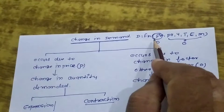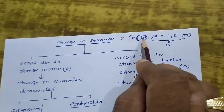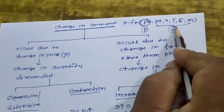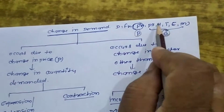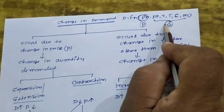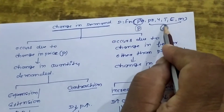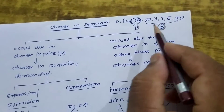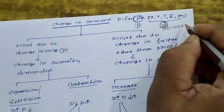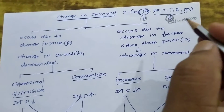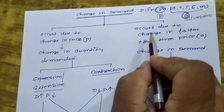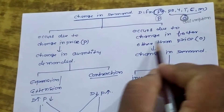Dear students, you must have noticed one thing. In demand, there is one price and one factor 'other than price.' So in all these cases, price becomes constant, and the change in demand happens due to change in factors other than price. And these other factors are what we call assumptions. Now I will make the flow chart: change in demand occurs due to change in price, or occurs due to change in factors other than price.